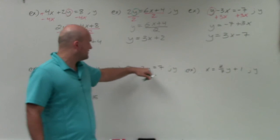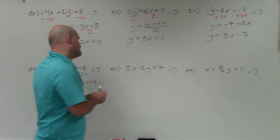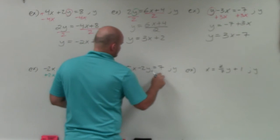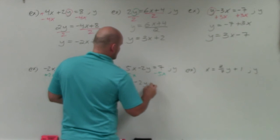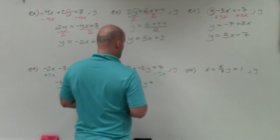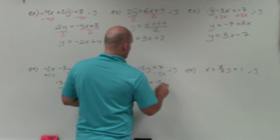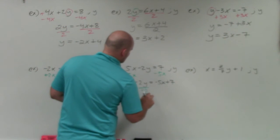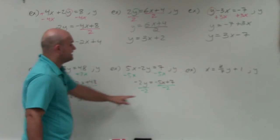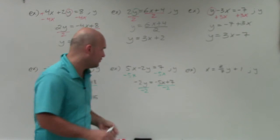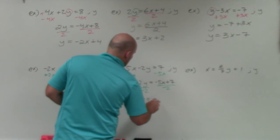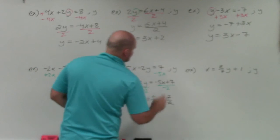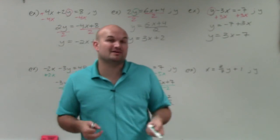Here, my variable y is being multiplied by negative 2 and being added by 5x. To undo adding 5x, I subtract 5x from both sides. That leaves negative 2y equals negative 5x plus 7. To undo multiplying by negative 2, I divide by negative 2 on both sides. Negative 2 doesn't divide evenly into either, so I rewrite them as fractions. That gives y equals positive 5/2 x minus 7/2, because 7 divided by negative 2 is negative 7/2.